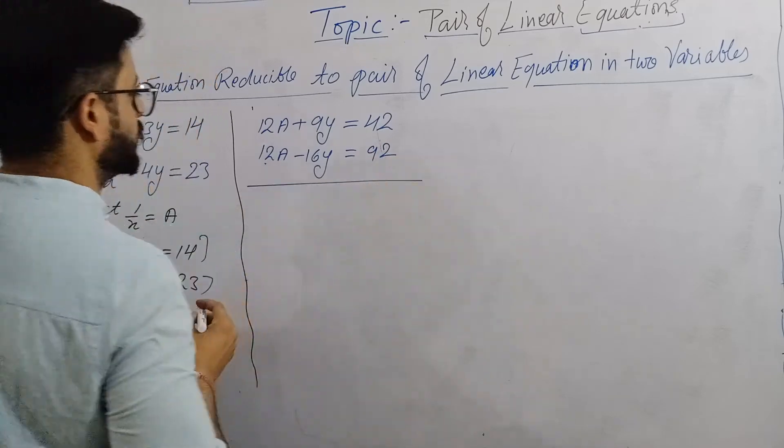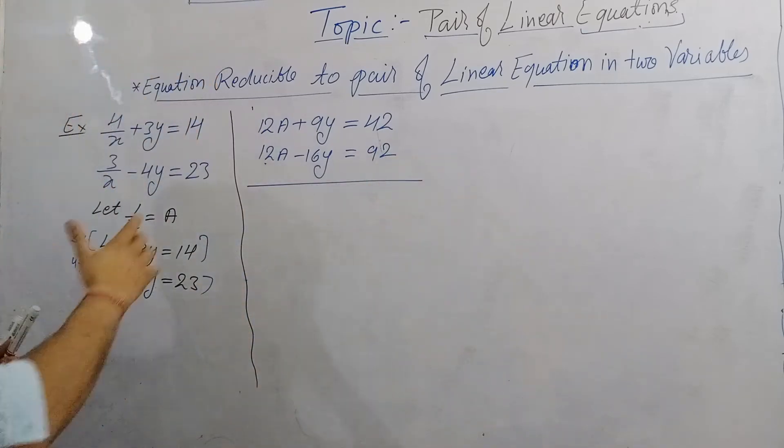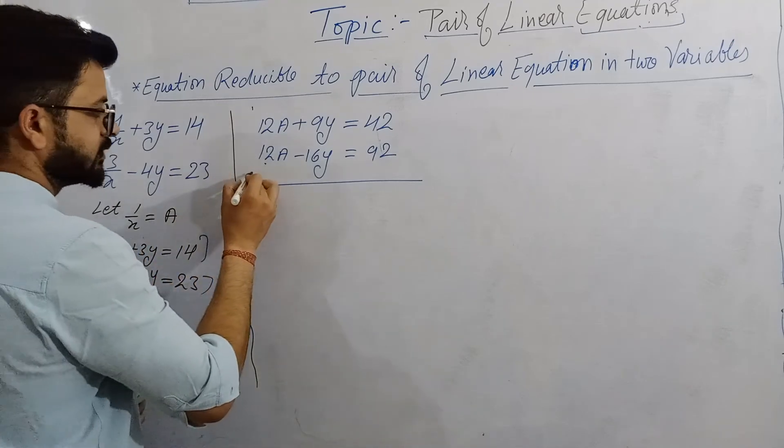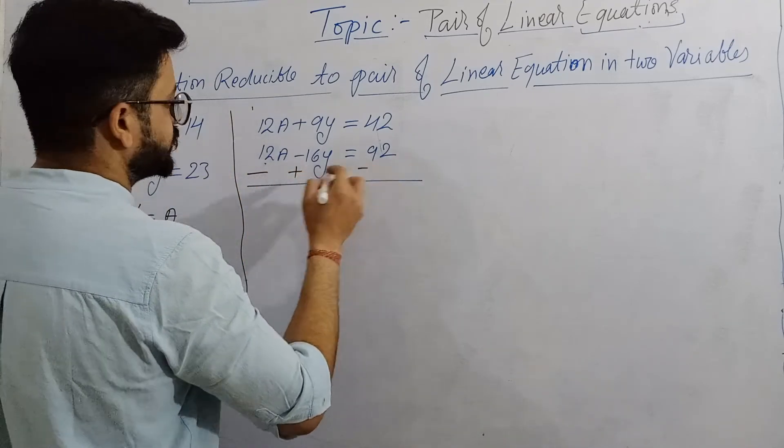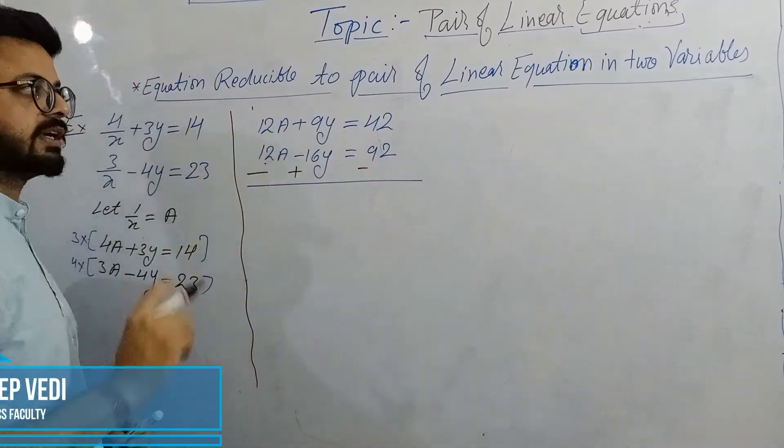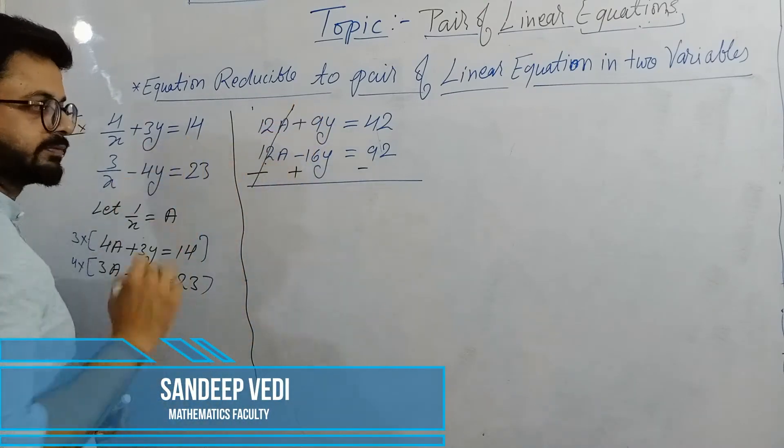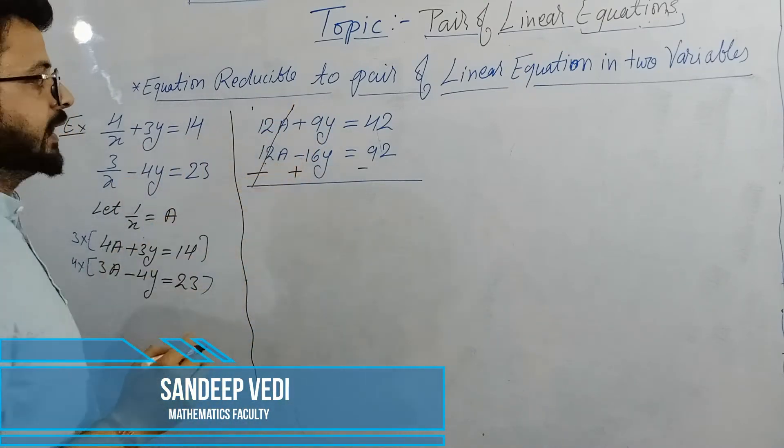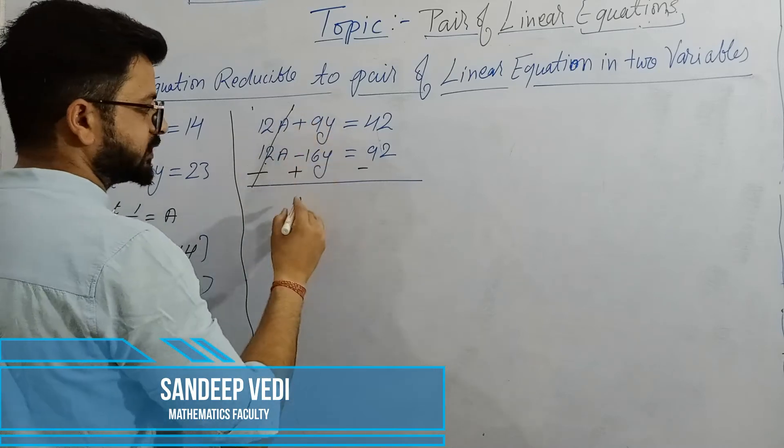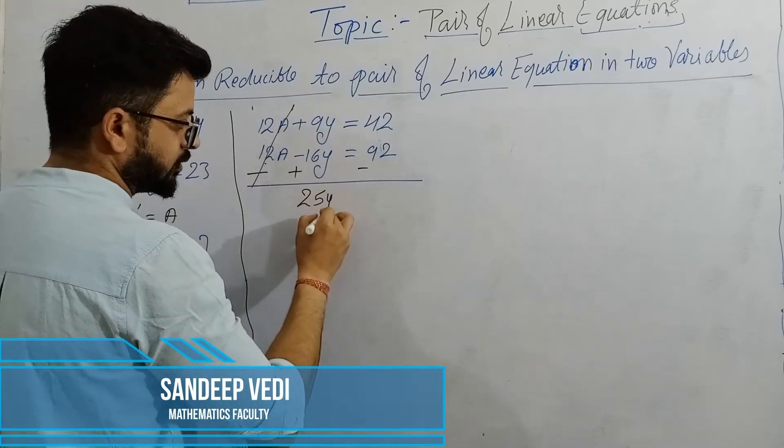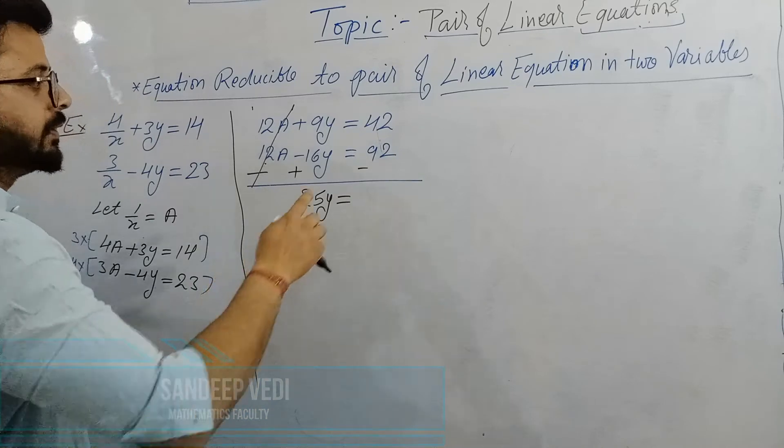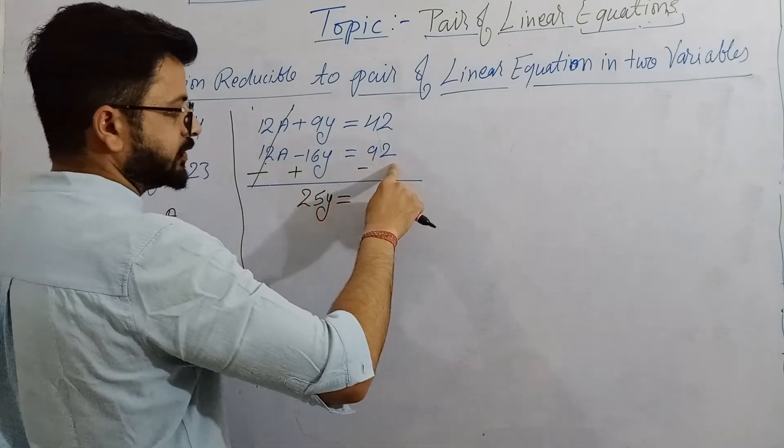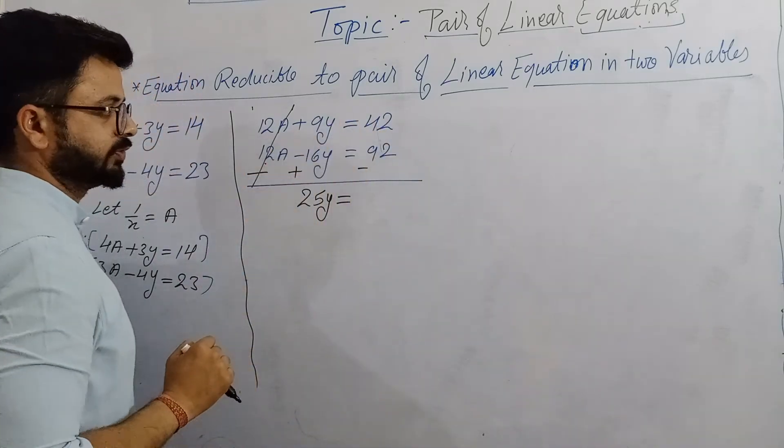Now both are positive, so need to change sign. If we are changing for one sign then we will change the sign of all. 9 plus 16Y, both are positive.